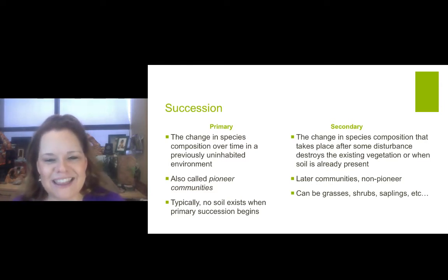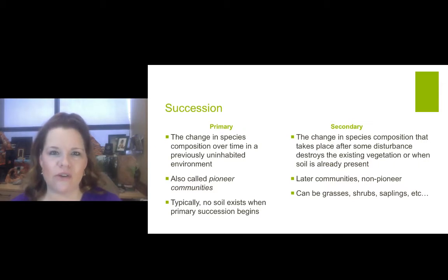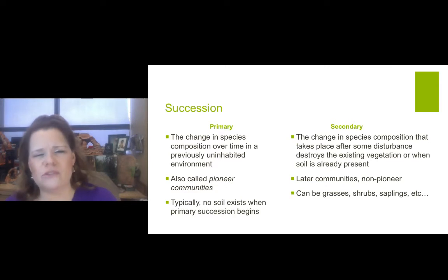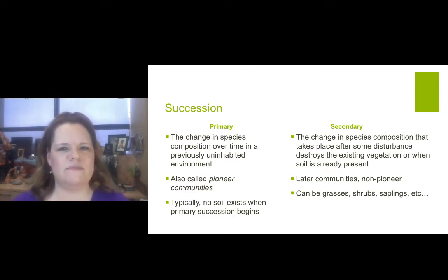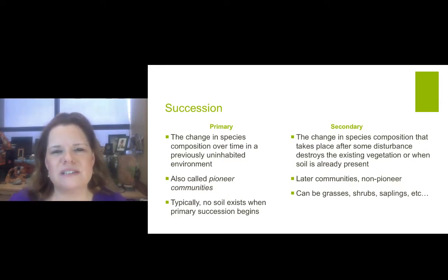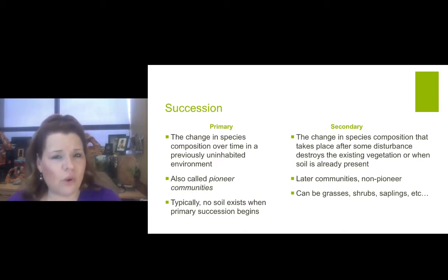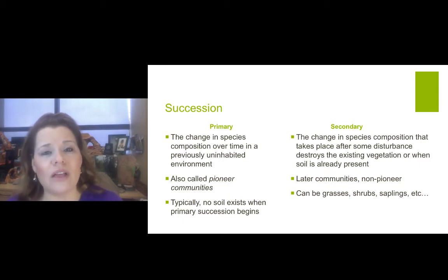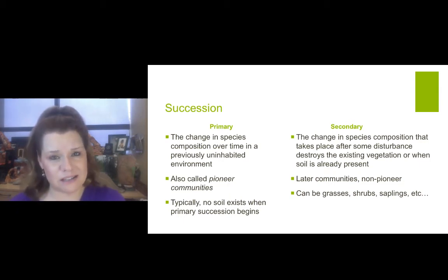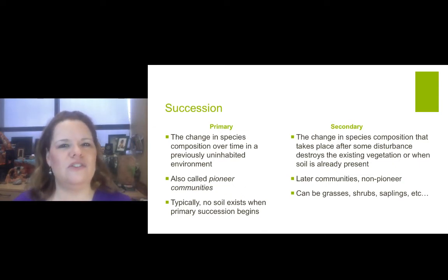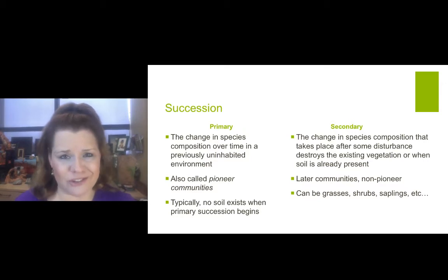Secondary succession is the change in species composition that takes place after some disturbance destroys the existing vegetation, or when the soil is already present. These happen when later communities are non-pioneers — they've had time to develop and establish soils. They can be grasses, shrubs, saplings, or trees. In a forest environment, we didn't just have forest automatically in geologic time. It happened over a succession of events that led to the formation of soil and ultimately forests. A succession can happen in our own lifetime, even shorter, in a forest environment.